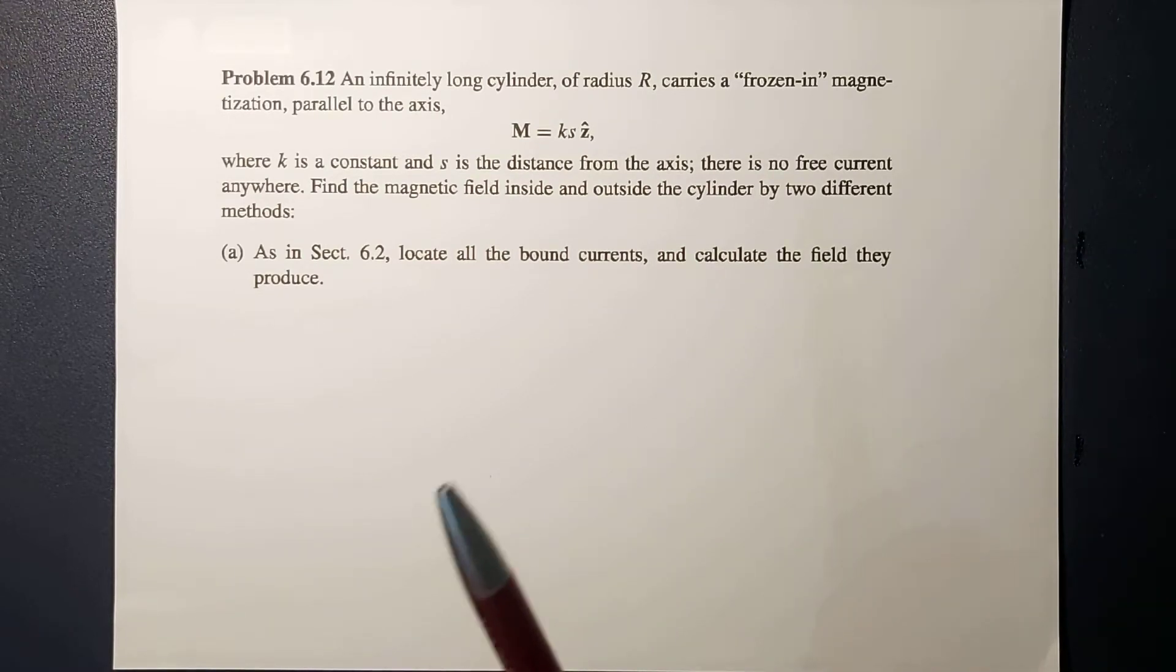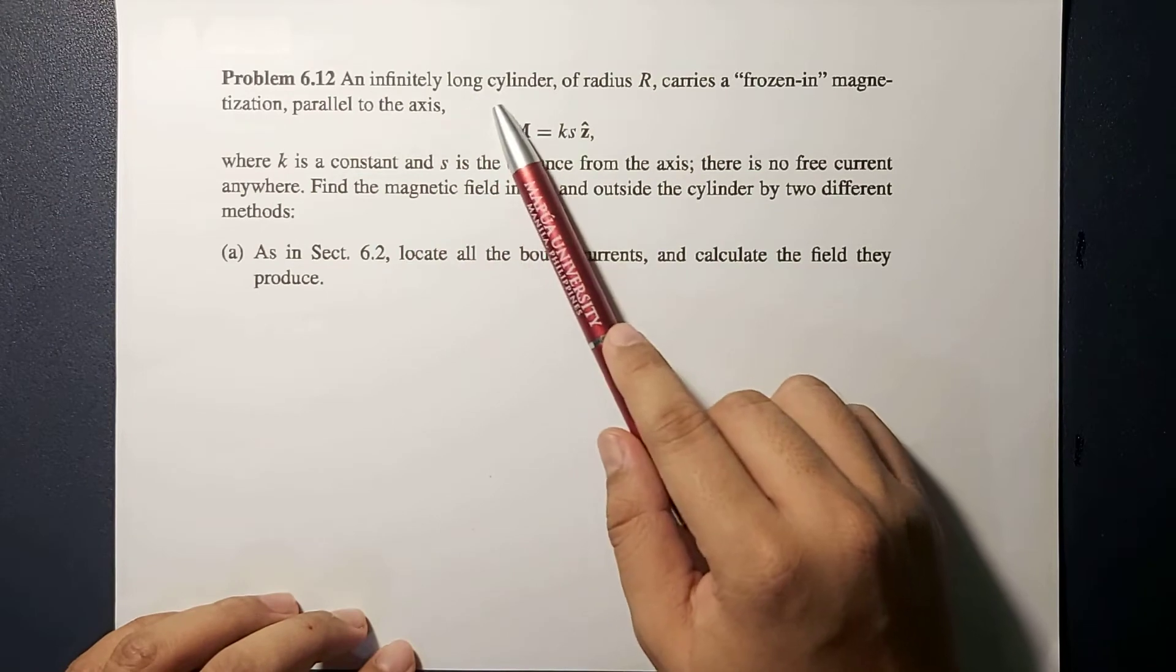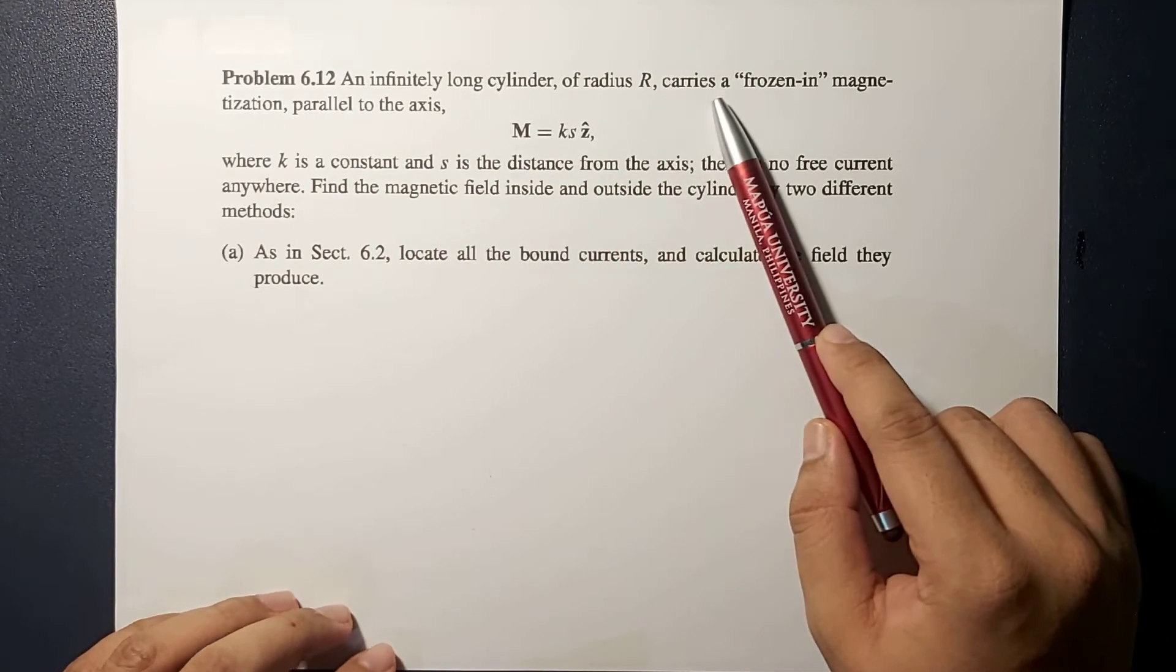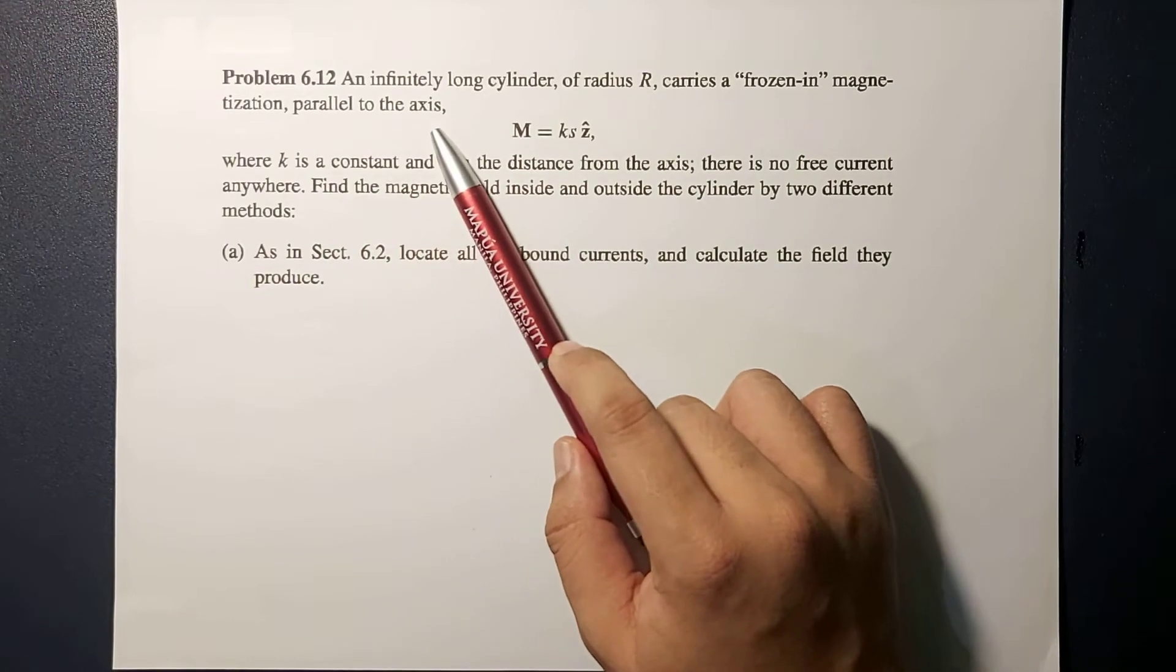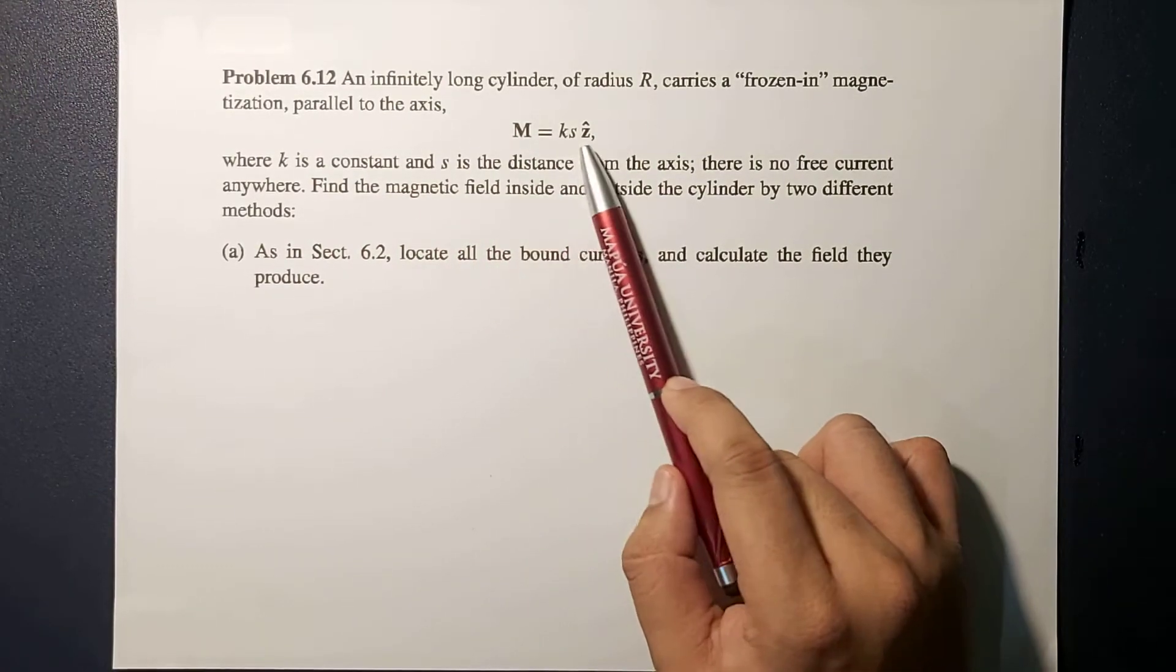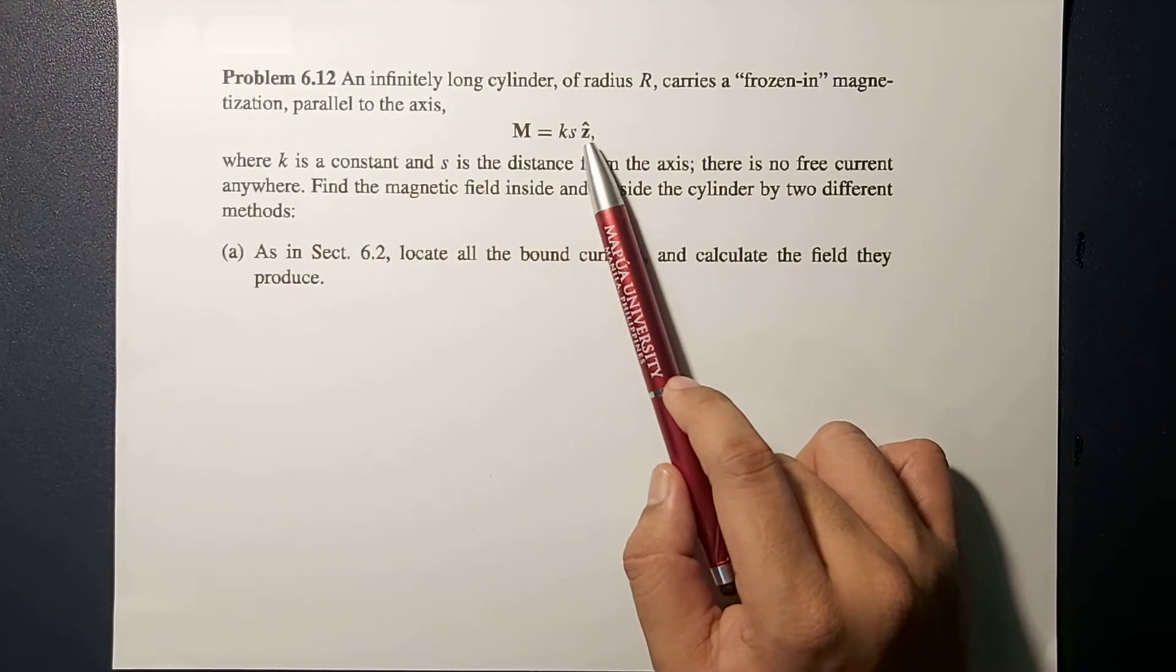The problem reads: an infinitely long cylinder of radius R carries a frozen-in magnetization parallel to the axis given by this equation M equals KS Z hat.